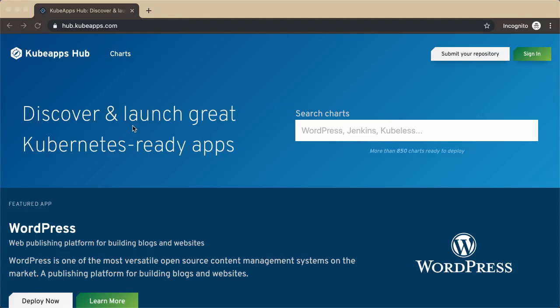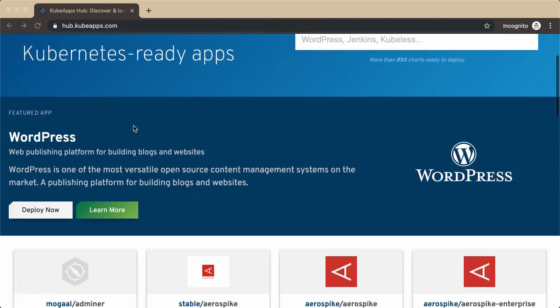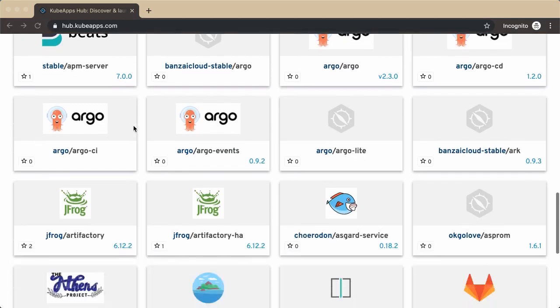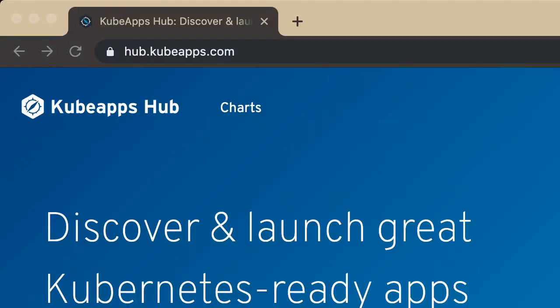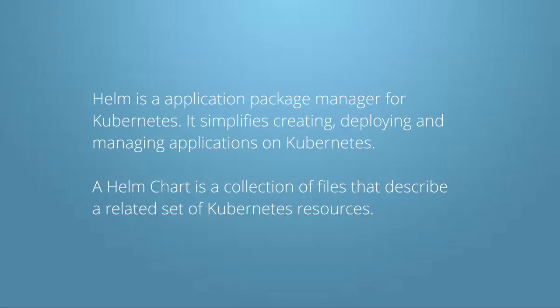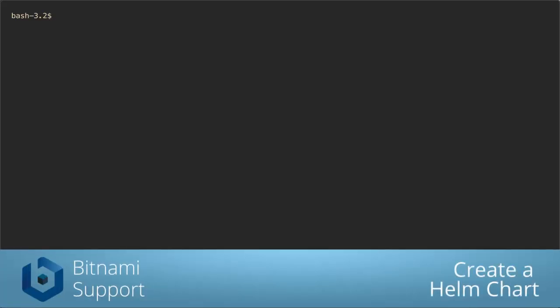Please check out the Bitnami catalog of trusted, up-to-date and easy-to-use applications and Helm charts for Kubernetes. You can find it at hub.kubeapps.com. So first, what is Helm? Helm is an application package manager for Kubernetes. It simplifies creating, deploying, and managing applications on Kubernetes. Helm packages are called charts, and a chart is a collection of files that describe a related set of Kubernetes resources. So let's make that more visible by creating a chart.